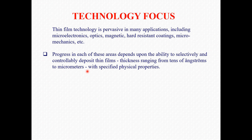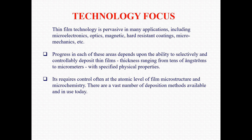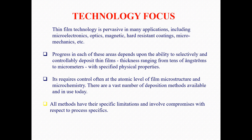You should be specific — you should specify the physical properties you need. Whenever you are trying to deposit a thin film, first specify the application you have in mind: for what purpose are you trying to synthesize the thin film? With that in mind, specify the physical properties. In addition, it requires control often at the atomic level to obtain film microstructures and microchemistry. There are a vast number of deposition methods available and in use today.